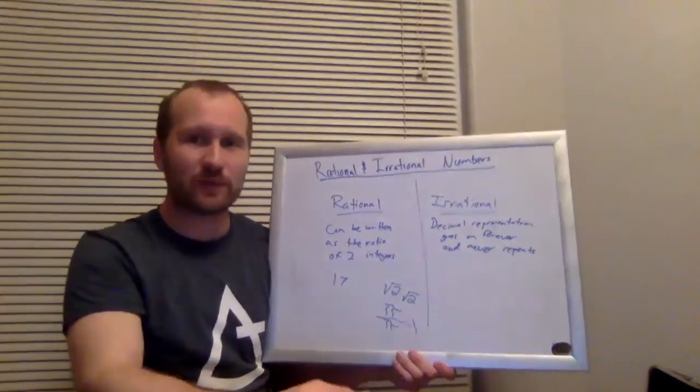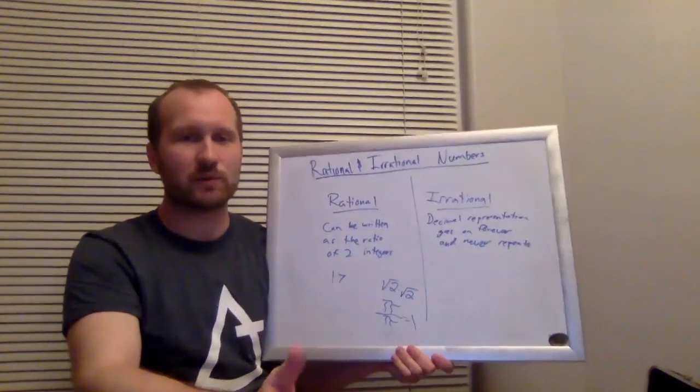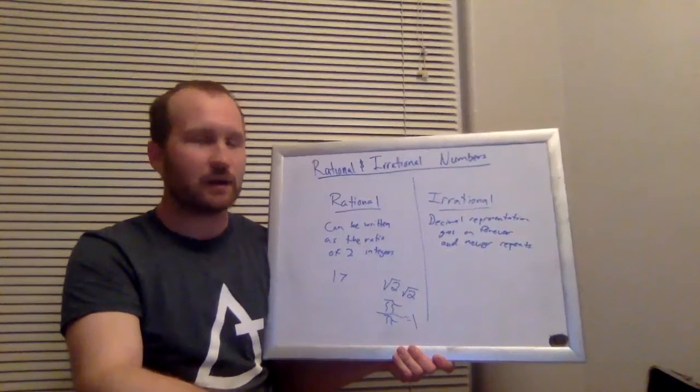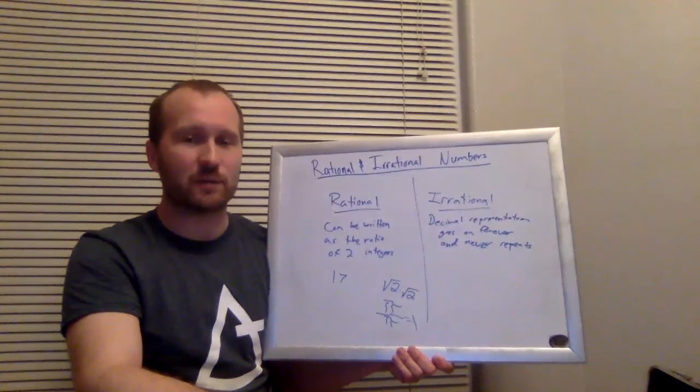That, more or less, hopefully will give you an idea of how to tell these two numbers apart, how they're different. And then we looked at some of the most common irrational numbers, like pi and some of the square roots.